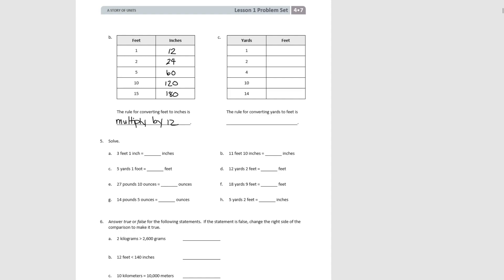For part C, we're going from yards to feet. Pause the video and fill that one out. 1 yard is 3 feet; 2 yards is 6 feet; 4 yards is 12 feet; 10 yards is 30 feet; and 14 yards is 42 feet. The rule for converting from yards to feet is to multiply by 3.